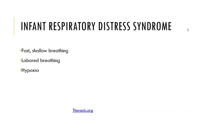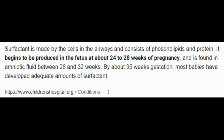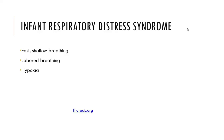Infant respiratory distress syndrome is the result of inadequate surfactant production in newborns or premature babies. This can lead to increased surface tension and alveolar collapse. The alveoli are the tiny air sacs at the end of our bronchioles — the air tubes in the lungs.